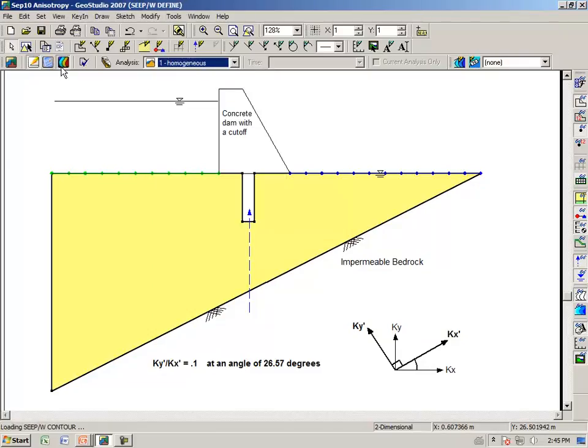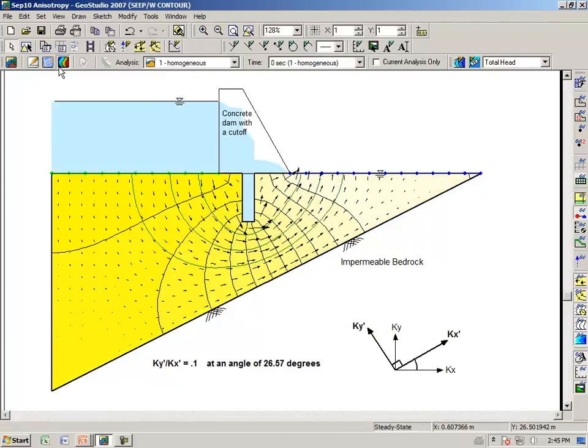And looking at the results view, we indeed see what we would anticipate. And that our flow lines are perpendicular to our equal potential lines. As we would expect for a homogeneous case.